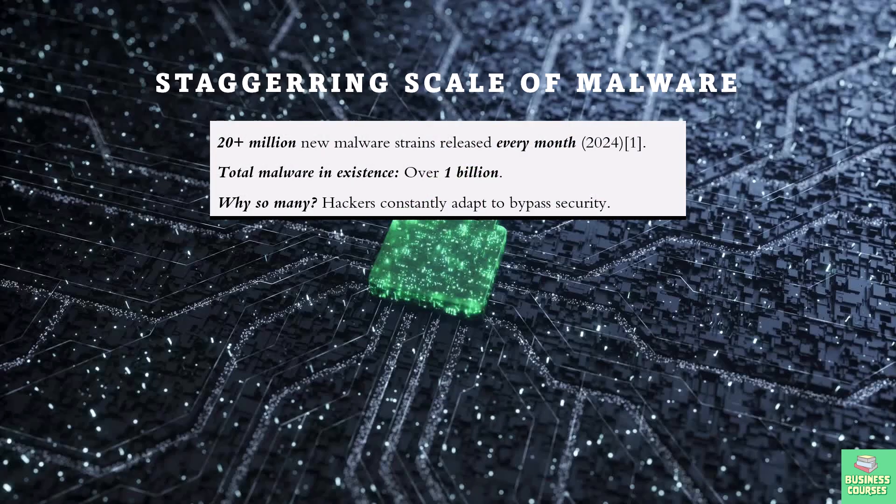As of 2024, cybersecurity researchers detect over 20 million new malware variants every single month — that's roughly 600,000 per day. In total, there are now more than 1 billion unique malware strains in the wild. Why so many? Because every time security companies develop better defenses, hackers tweak their malware to evade detection. It's a never-ending arms race.